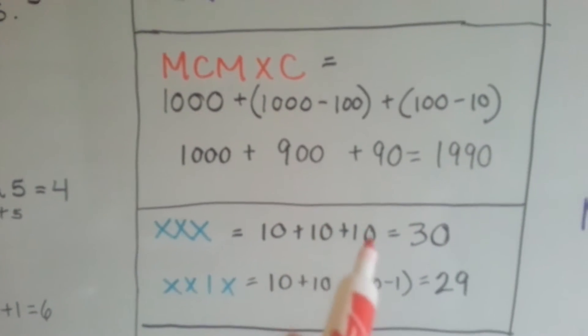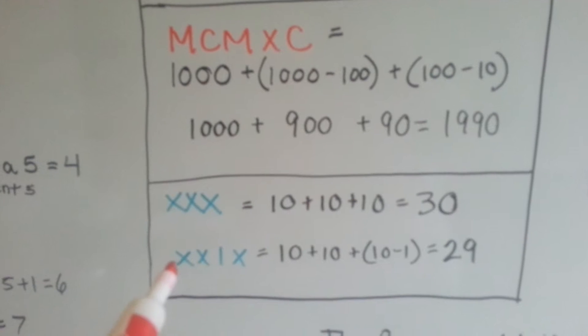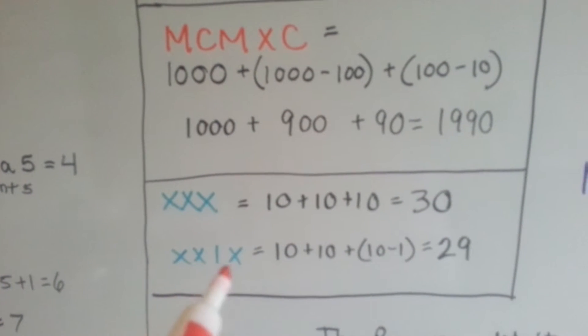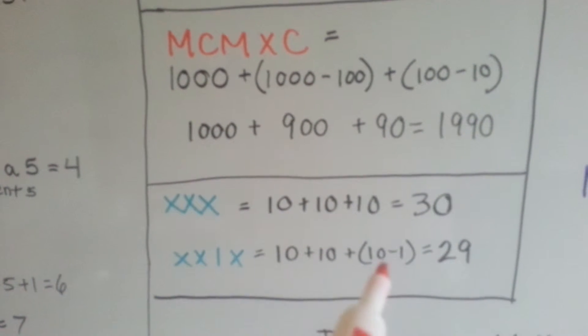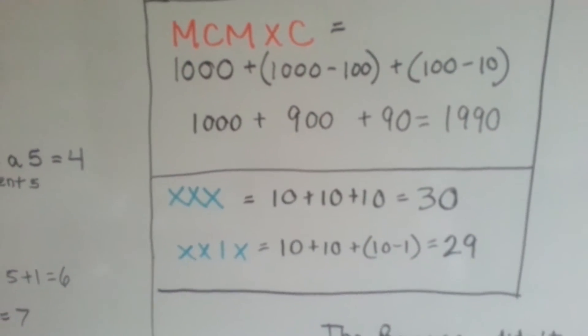Three X's would be 10 plus 10 plus 10, which is 30. But two X's and then an IX means 10 plus 10 plus 1 from 10, which means 29.